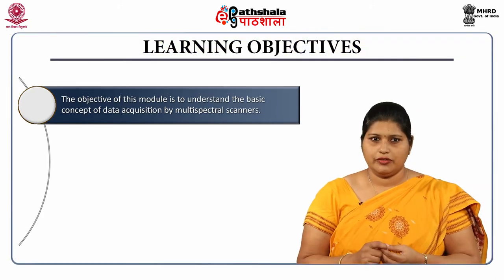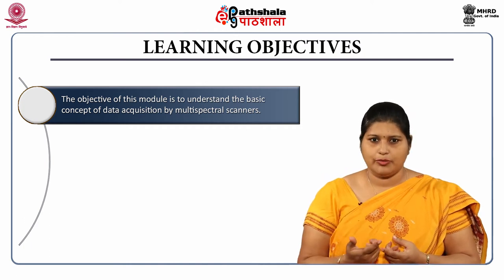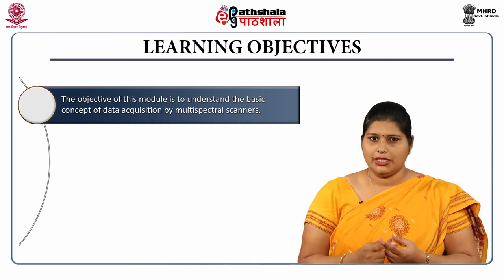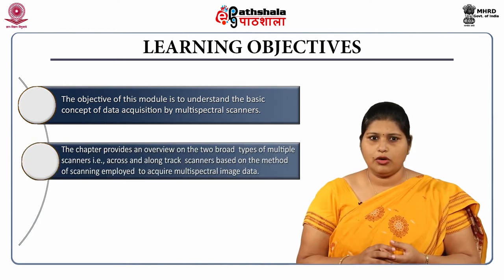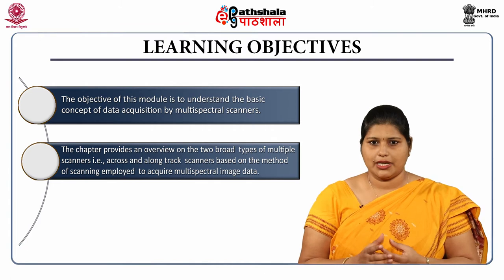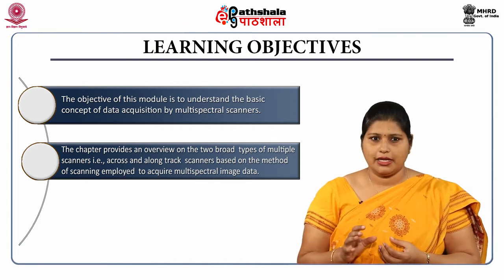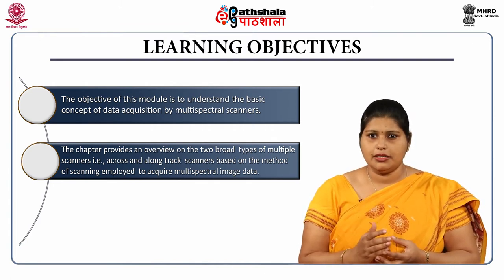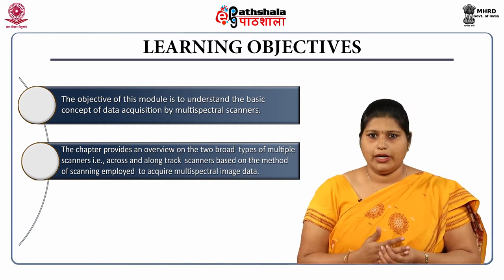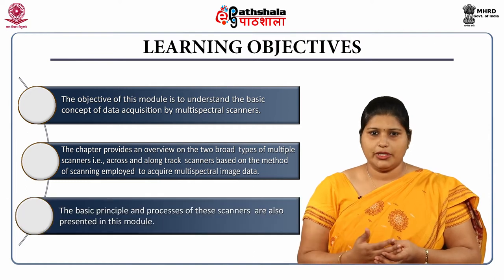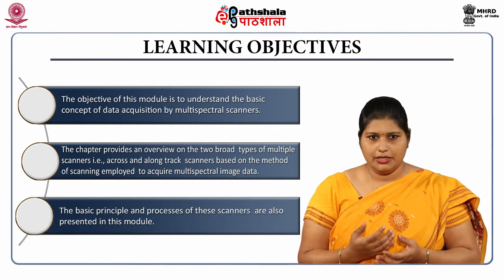The learning objectives of this module are to understand the basic concept of data acquisition by multispectral scanners. This chapter provides an overview of the two broad types of multispectral scanners — that is, across-track scanners and along-track scanners — based on the method of scanning employed to acquire multispectral image data. The basic principles and processes of these scanners are presented in this module.